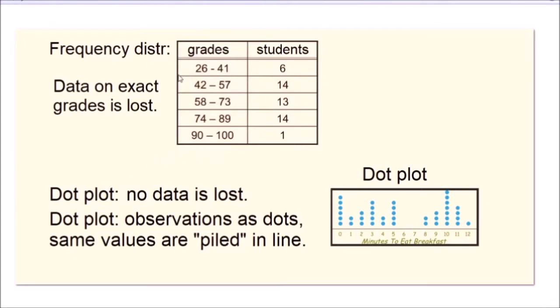Here's an example of frequency distribution table at the top, where we have a class with a given number of students, and the table shows how many of the students got grades between 26 to 41, between 42 to 57, and so on. We see, for example, there was only one student who got a grade between 90 and 100, and 14 students who got grades between 74 and 89.